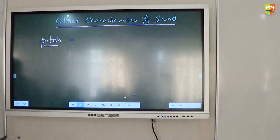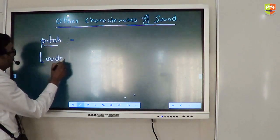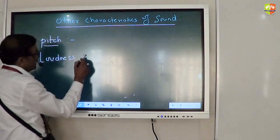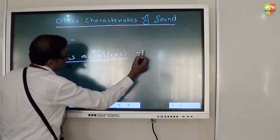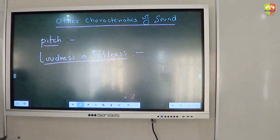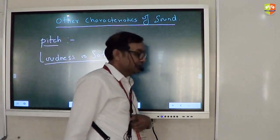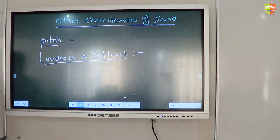Write down. The next is loudness or softness. The loudness or softness of a sound is determined by its amplitude. So basically, if amplitude is higher, the loudness will be higher.